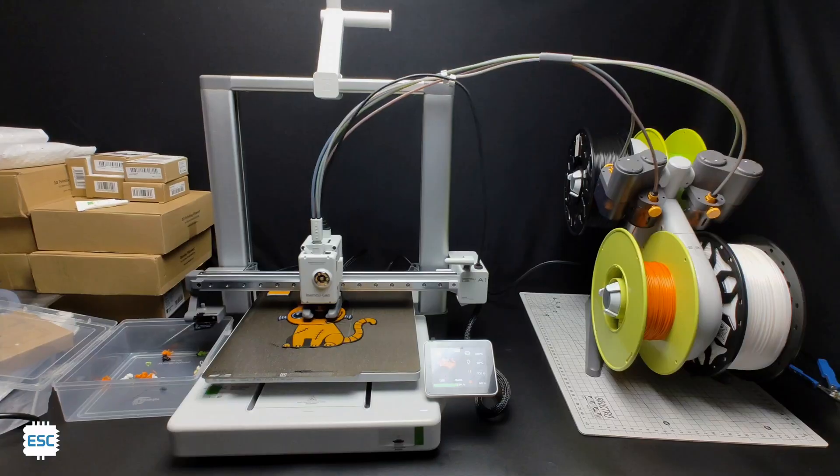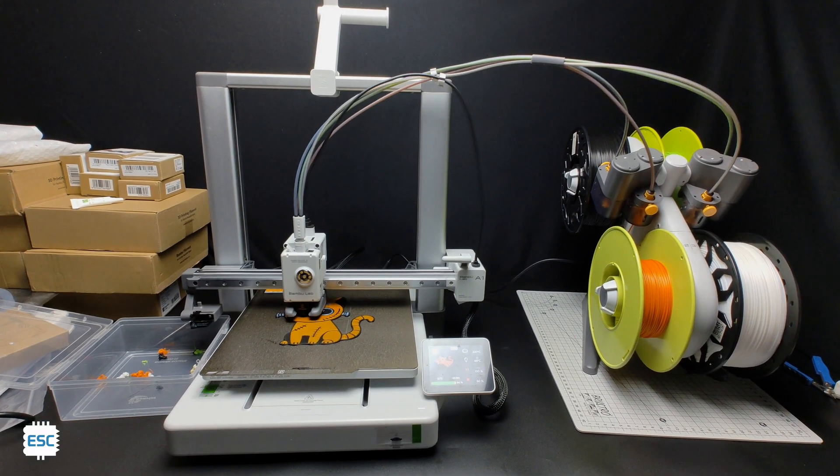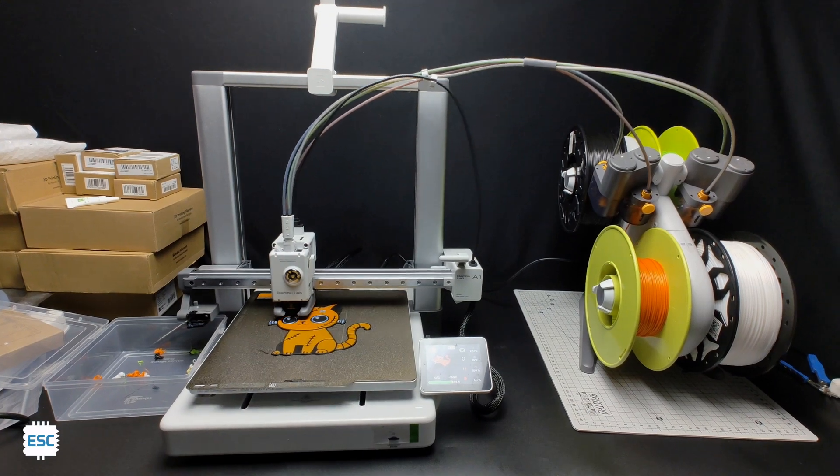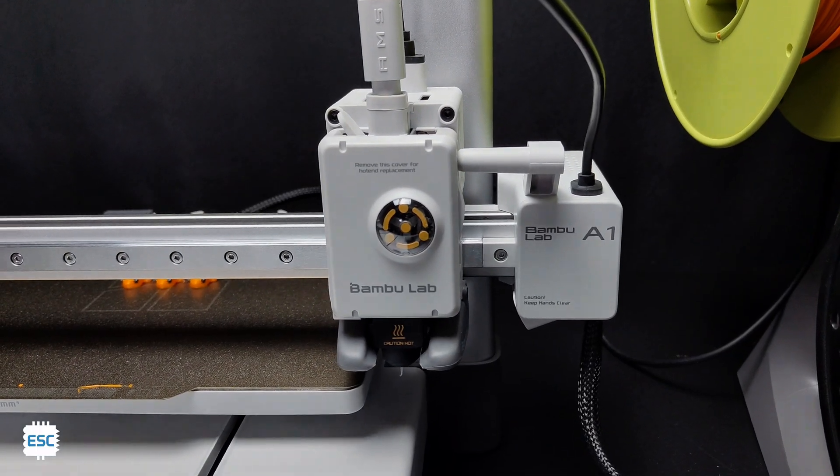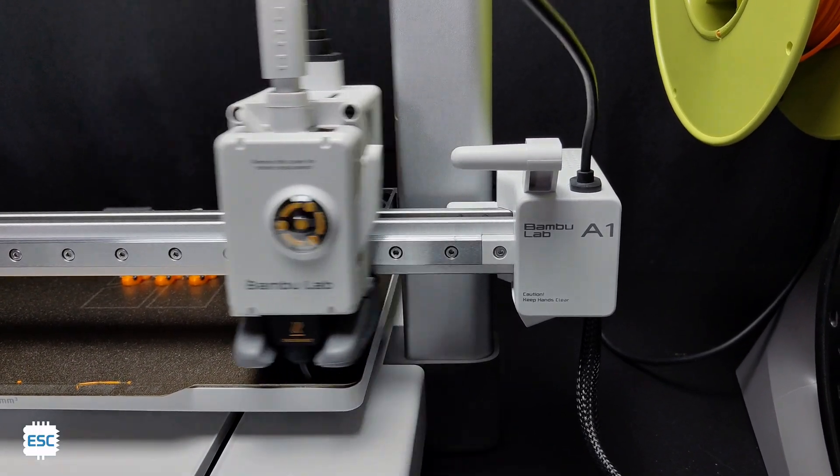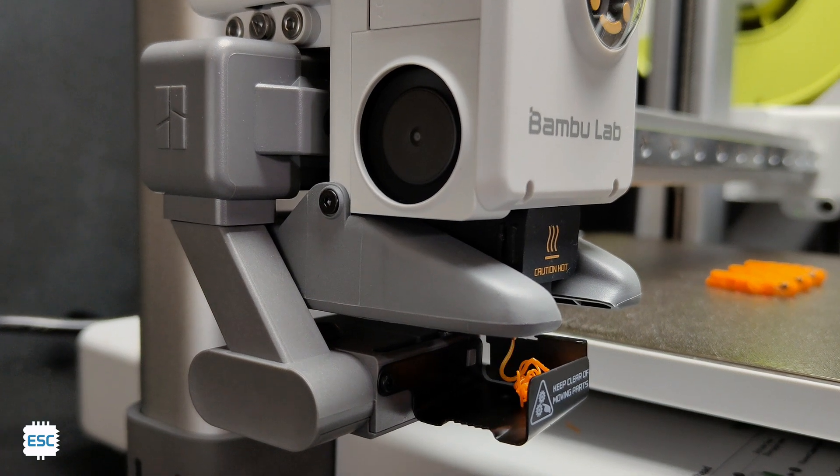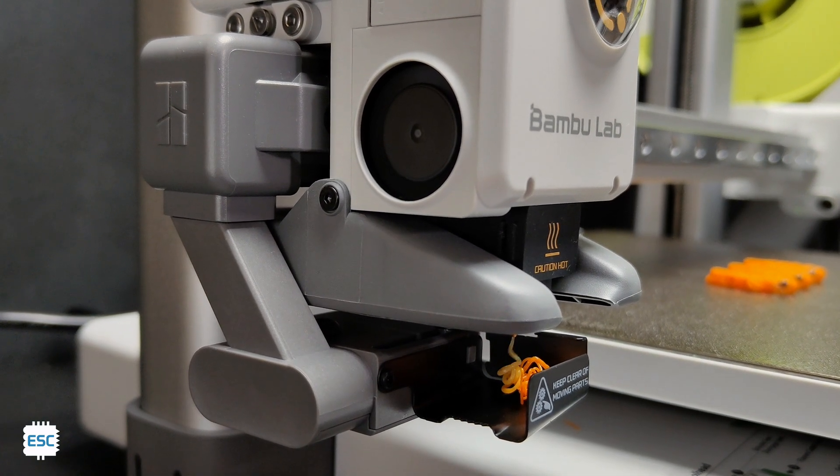We can see the printing. After printing one color the machine automatically cuts the filament. Then purge the remaining filament from nozzle and load the next filament. Very nice.